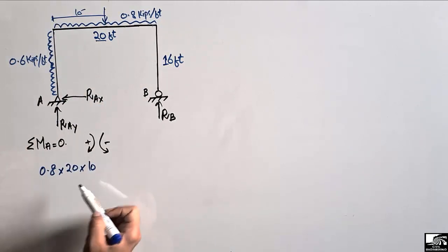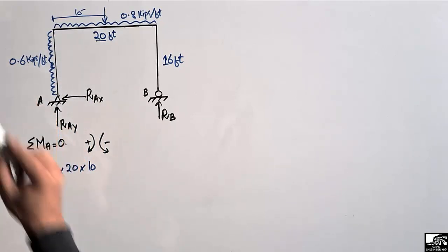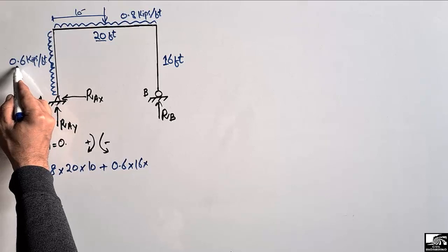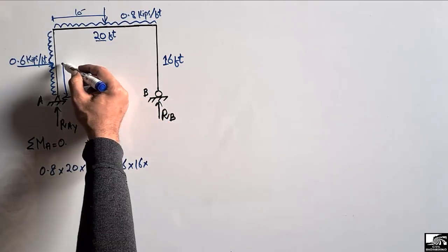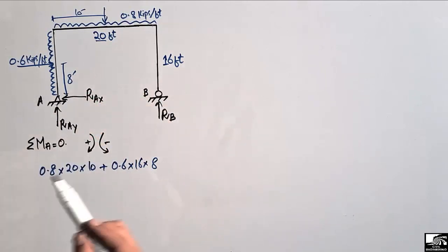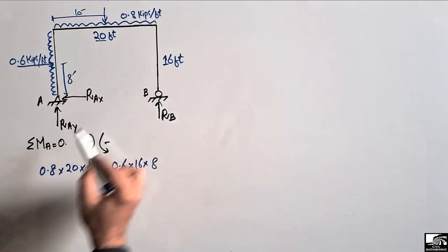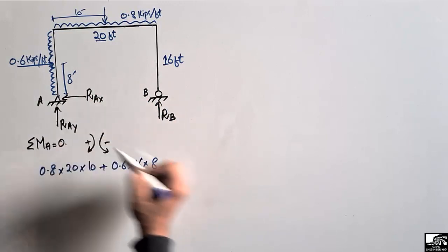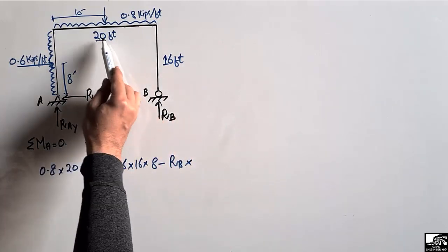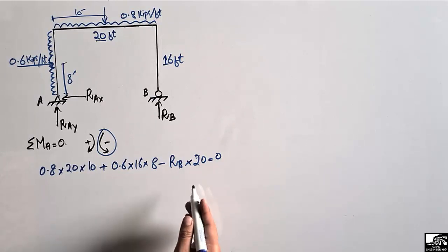This is clockwise, so it's positive. Similarly, the lateral load on the column also creates a clockwise moment about point A: 0.6 multiplied by 16 foot (total column length) multiplied by 8 foot (moment arm at center, which is 16 divided by 2). The reaction RB creates an anti-clockwise moment about point A, so it is taken as negative. RB multiplied by its moment arm of 20 foot. Summation of all moments about point A equals zero.